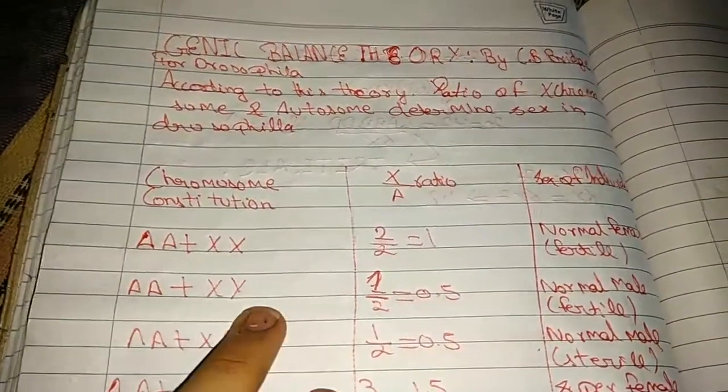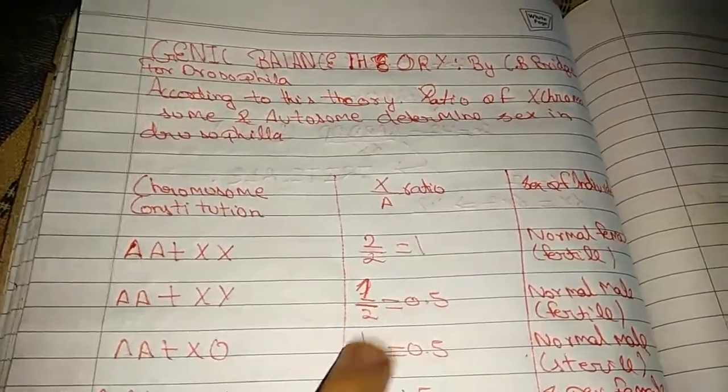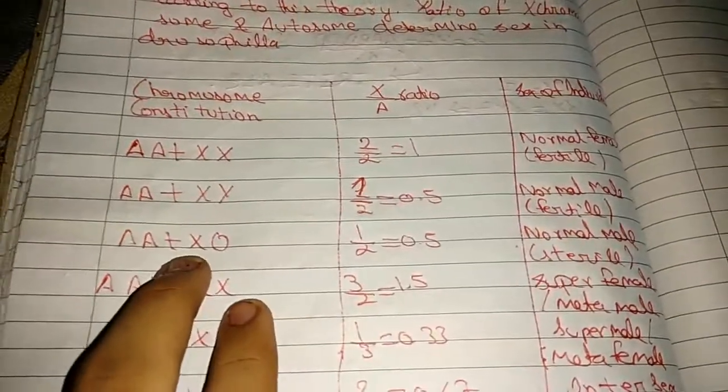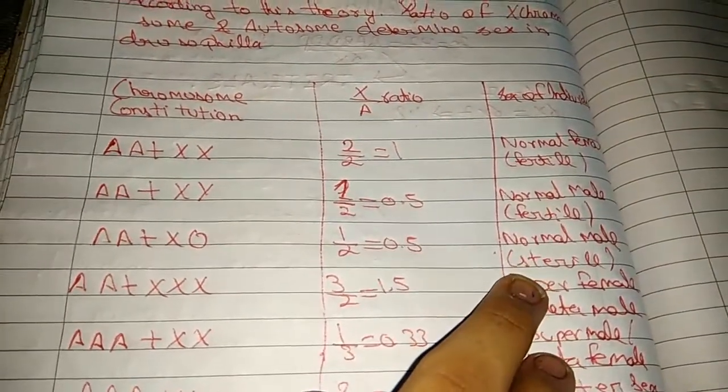AA + XY: X value is 1, autosome is 2. AA + XO: 1 by 2 equals 0.5, normal male, sterile.